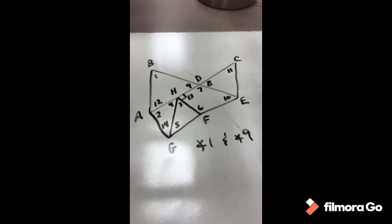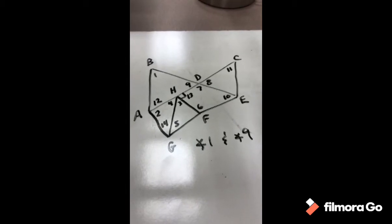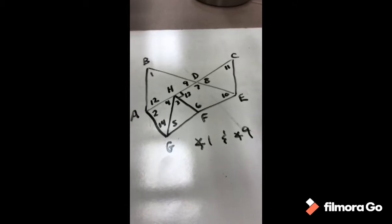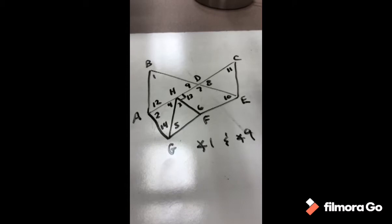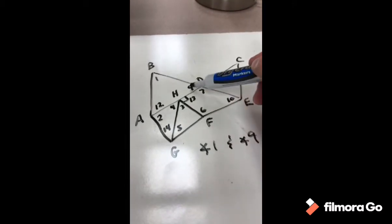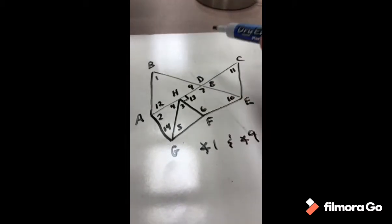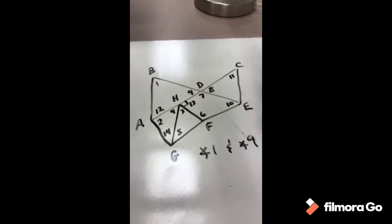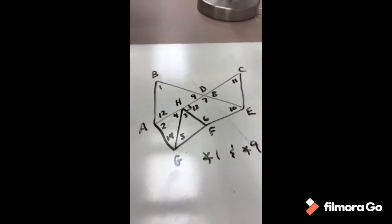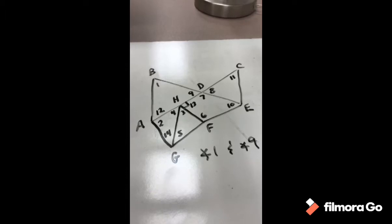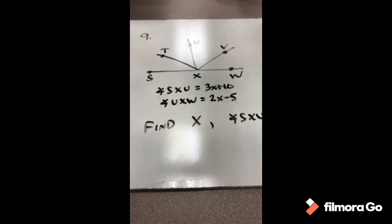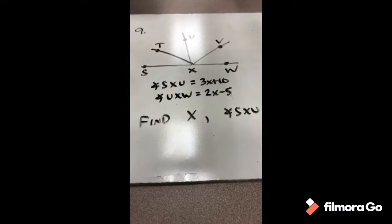How about the relationship between angles 1 and 9? Angles 1 and 9 are not next to each other, they are not vertical, and we do not know their measurements. Technically there is no relationship between angles 1 and 9 — we cannot consider them complementary, supplementary, adjacent, vertical, or a linear pair. None of those apply.